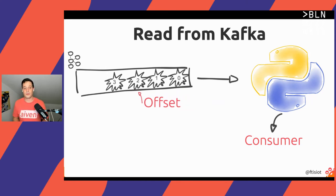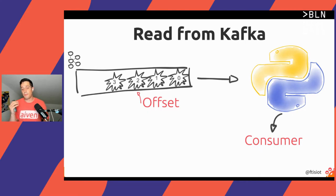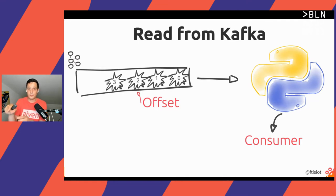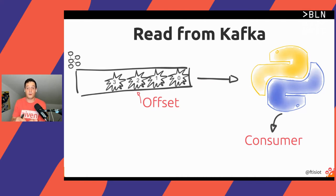Why is communicating back to Kafka really important? Because computers are not entirely reliable. The consumer could fail, but Kafka will know until what point that consumer read that specific log. So the next time the consumer pops up, Kafka will know which is the next item that the consumer didn't parse previously.